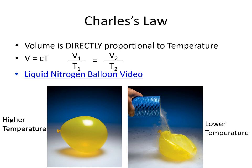Our second gas law is Charles's law. Charles's law tells us that volume and temperature are directly proportional — as volume goes up, temperature goes up, and so on. We can write it as a proportionality or as an equality: volume equals some constant times temperature. In different circumstances: V1 = constant × T1 and V2 = constant × T2. Rearranging and setting the constants equal gives us V1/T1 = V2/T2, which is the form of Charles's law we'll use.